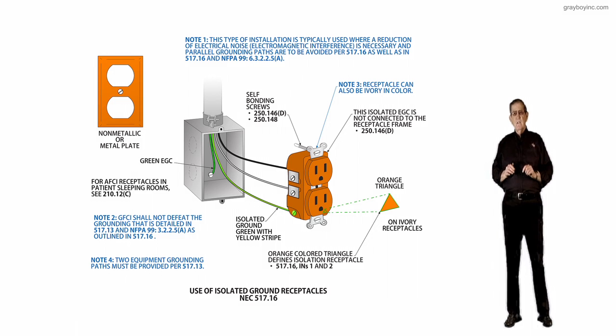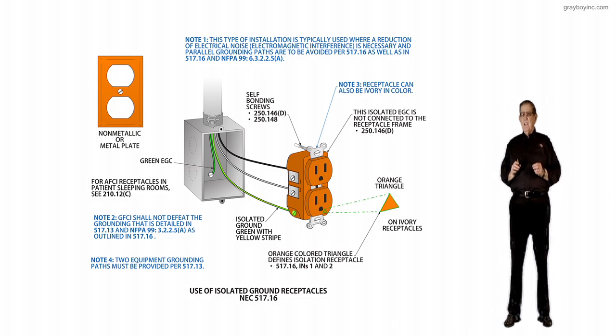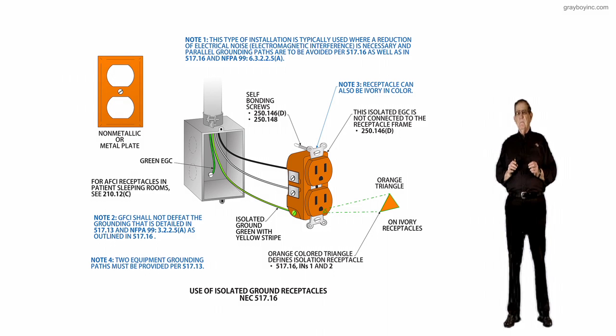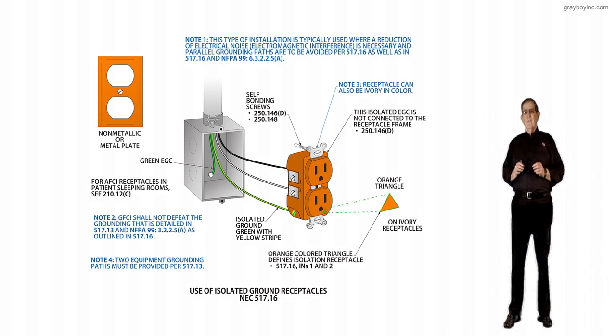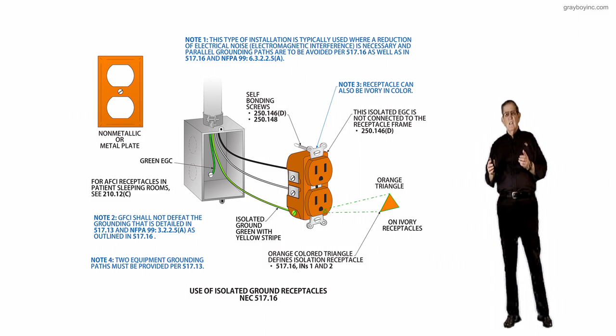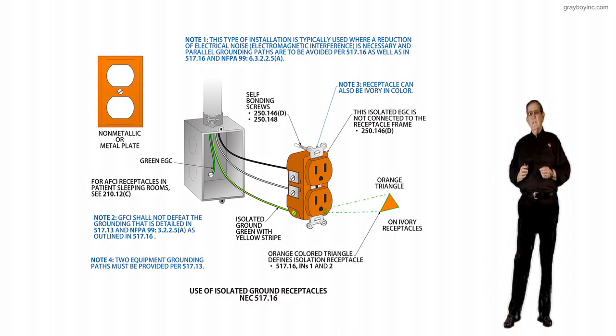The purpose of change was to accept a new sentence, which has been added to clarify the use of isolated receptacles outside the patient care area. It is the clear intent of this section that both grounding methods required in 517.13 be present in wiring methods used for isolated grounded receptacles. In addition, a separate equipment ground using a green insulated conductor, usually green with yellow stripes, identifies the isolation ground and shall be connected to the equipment grounding terminal of the isolated grounded receptacle terminal.